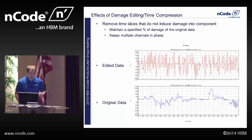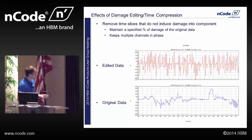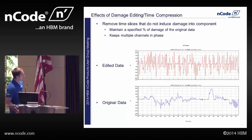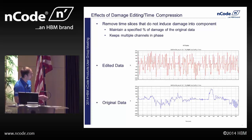The effects of damage editing, or time compression: it removes time slices that don't induce any damage — or minimal damage — into the component. You specify a percent of damage to maintain from the original data, say 90%. Looking at two traces — the edited data and the original data on the same magnitude and time scale — the original data might have a large event here and here with maybe 10 to 15 seconds between them and nothing going on in between, whereas the edited data has all the events right one after another.